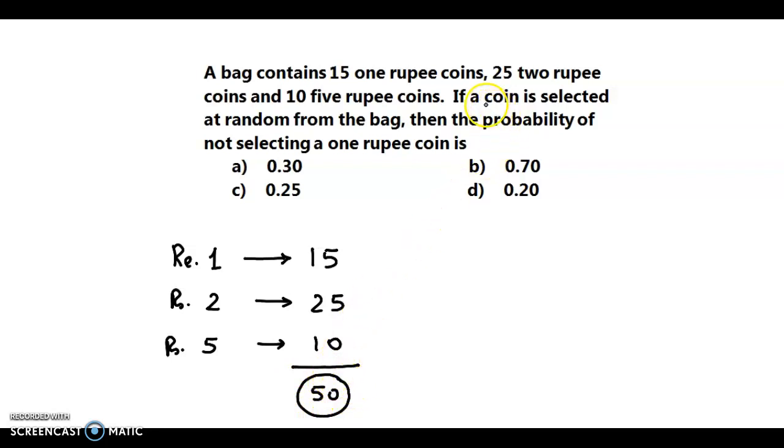Now the question is if a coin is selected at random. So here the sample space, that is n(S), is equal to 50.